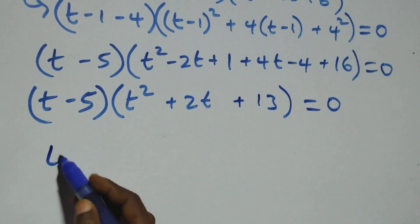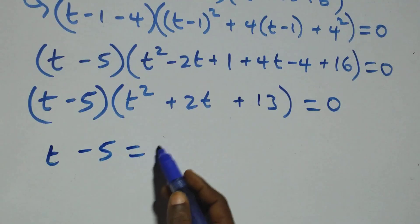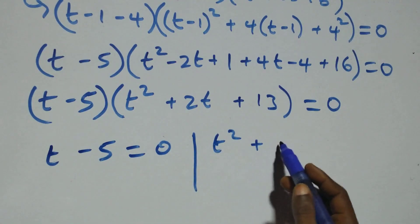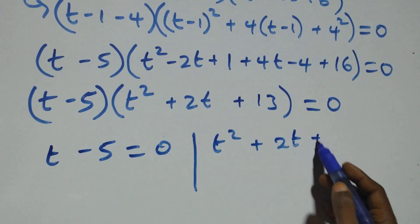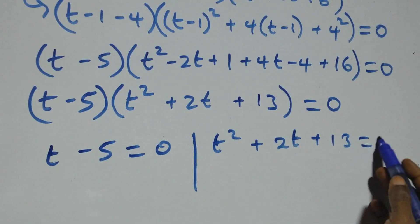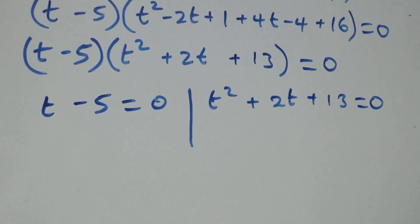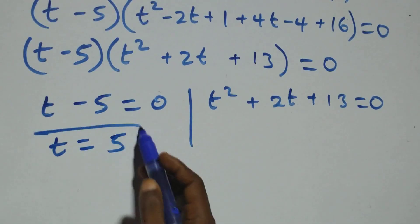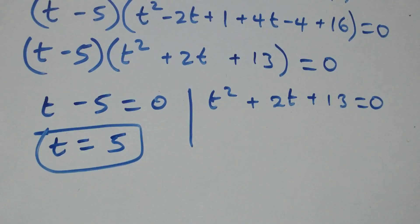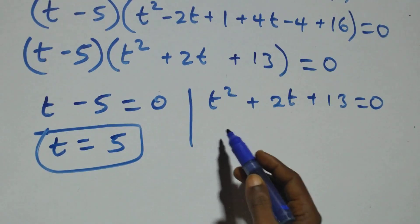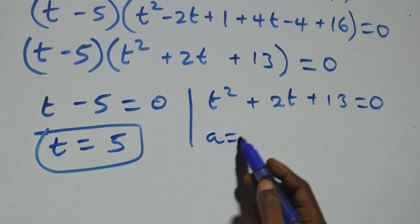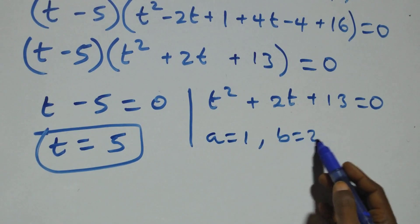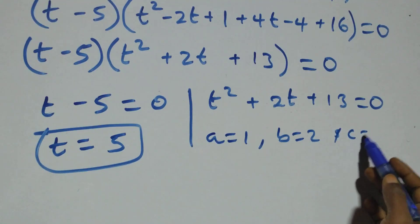Solving on this side, t = 5, which is also a real solution. And here we also have a quadratic equation where a = 1, b = 2, and c = 13.